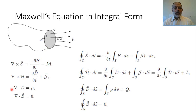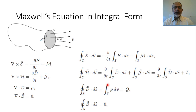The third equation in integral form: the integral of D dot dS over a closed surface equals the integral of rho dV, where V is the volume enclosed by the closed surface. The integration of the volume charge density dV equals the total charge enclosed inside this volume, which equals Q, where Q is the total charge.